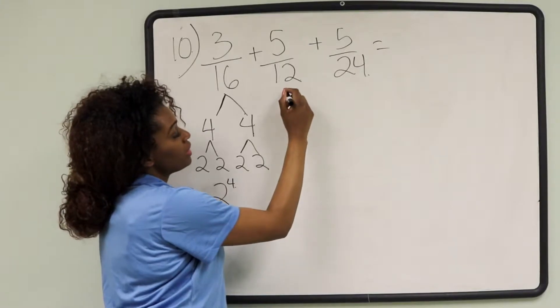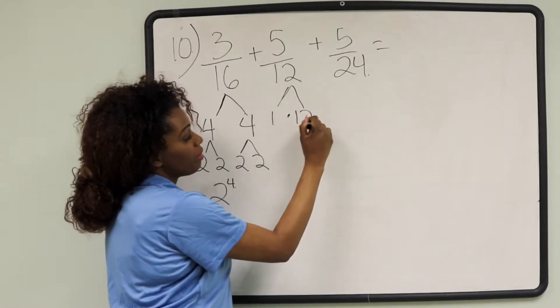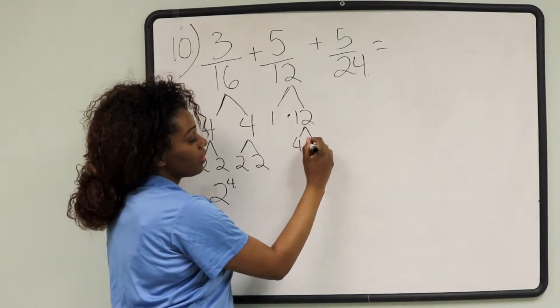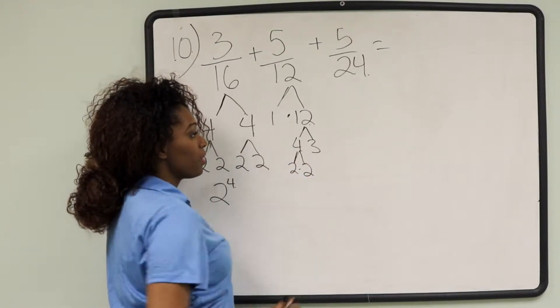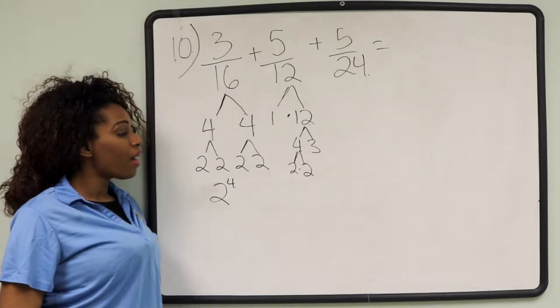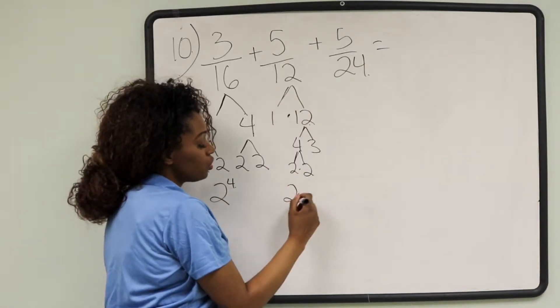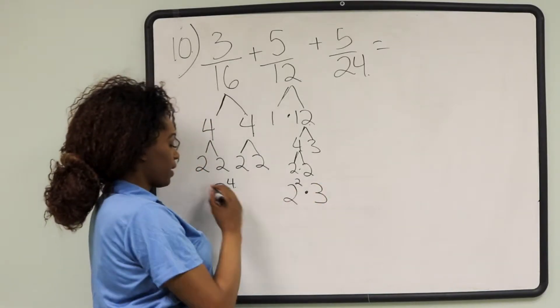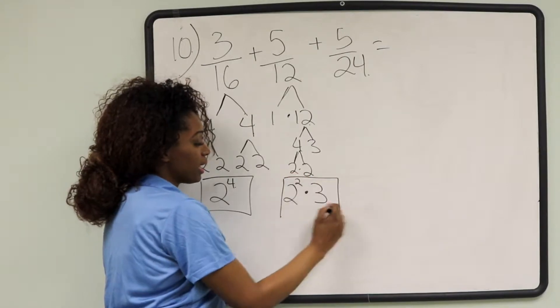For 12, we can do 1 and 12 and it can be broken down even further because I know that 4 and 3 are factors of 12. 2 and 2 are factors of 4. So for 12, the prime factors are 2 to the 2nd power times 3. So far we have 2 to the 4th and we have 2 to the 2nd times 3.